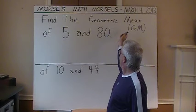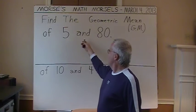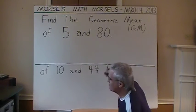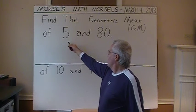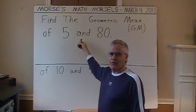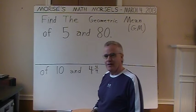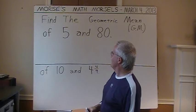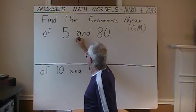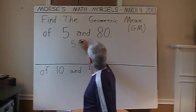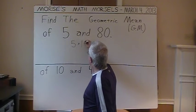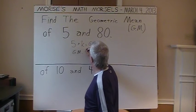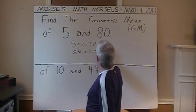So this first exercise states, find the number called the geometric mean, which I abbreviate as GM over on the upper right, as the number which, when 5 is multiplied by some number, it gives the geometric mean, and then the geometric mean multiplied by that same number finally gives 80. So we need something that says 5 times K equals GM, and then the GM, in turn, times that same K equals 80.